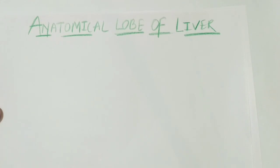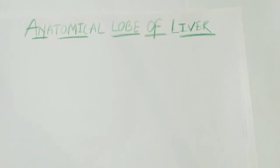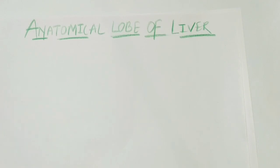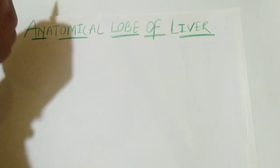On the basis of these surfaces, we are going to divide our anatomical lobes. These are the basic anatomical lobes of the liver — not the physiological lobes, which are more detailed. So this covers the basic anatomical lobes.